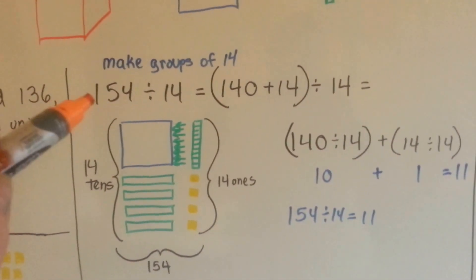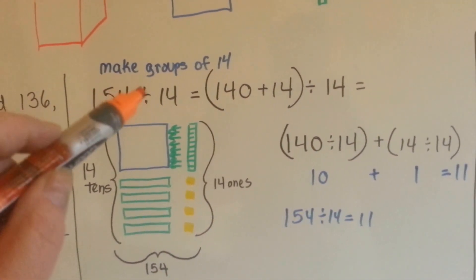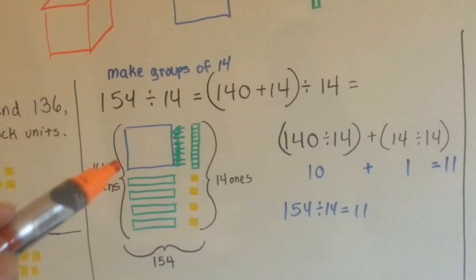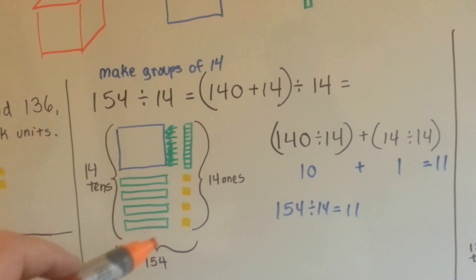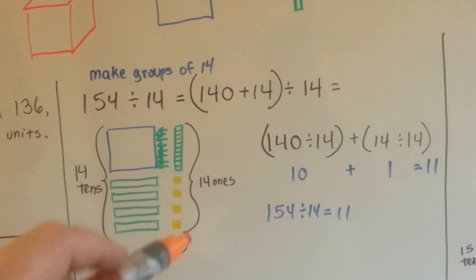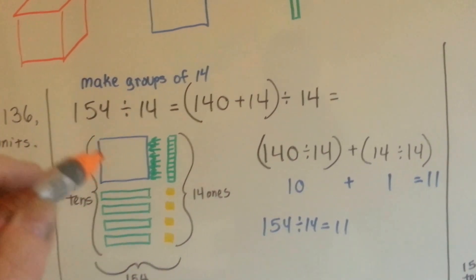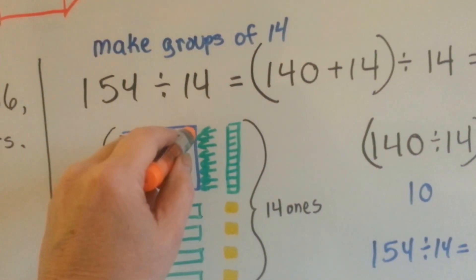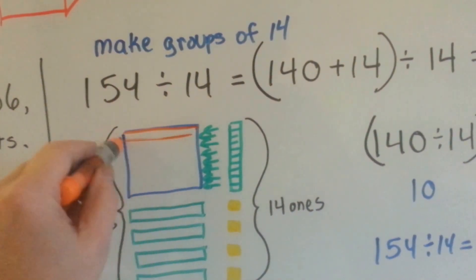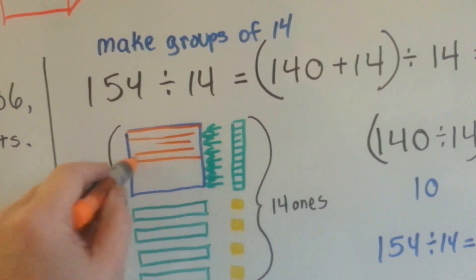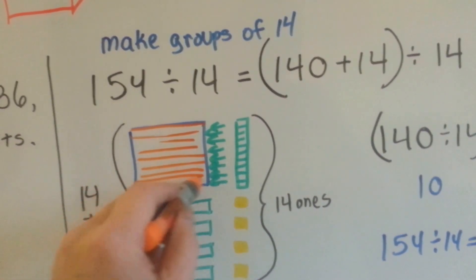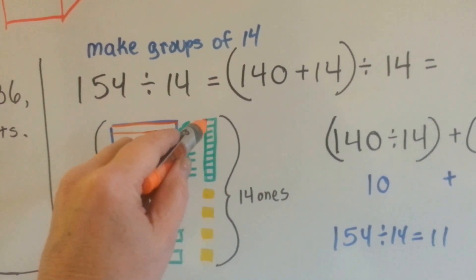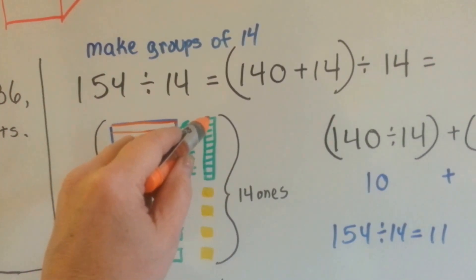Just like in this one, we have 154 divided by 14 — I want to make groups of 14. So I've got 14 tens and then 14 ones. What I'm going to do is: each 10 in here — imagine there are lines going across this way that are all tens — and each line is going to get matched with one single one.